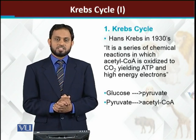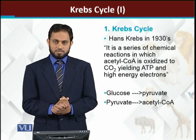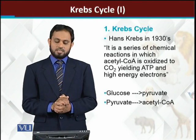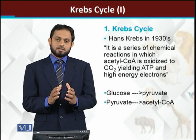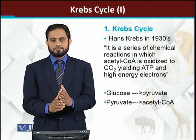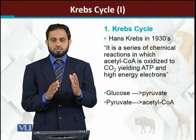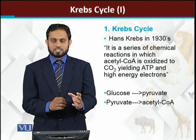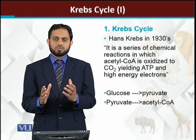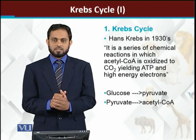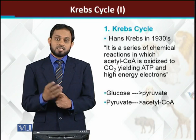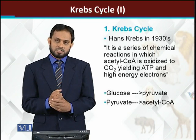The Krebs cycle is also called the citric acid cycle. Additionally, it is known as the tricarboxylic acid (TCA) cycle. It is called the citric acid cycle because the very first reaction — when oxaloacetate and acetyl-coenzyme A combine — produces citric acid. It is called tricarboxylic acid cycle because citric acid has three carboxylic groups.